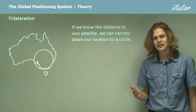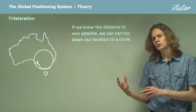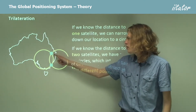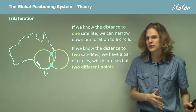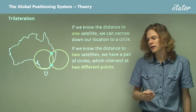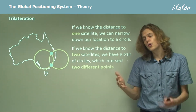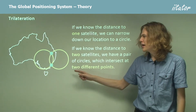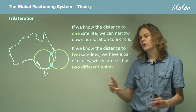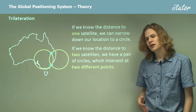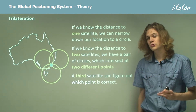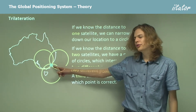So let's look at what another satellite says our location is — it will also give a possible circle of locations. If we have two satellites we get a second circle, and this second circle will cross over with the first. That means if we have to be on the edges of both circles, there are only two places we can be: the top intersection or the bottom intersection. If we then ask a third satellite where we are, it gives us another circle of possibilities, and combining all three circles leaves us with only one location.